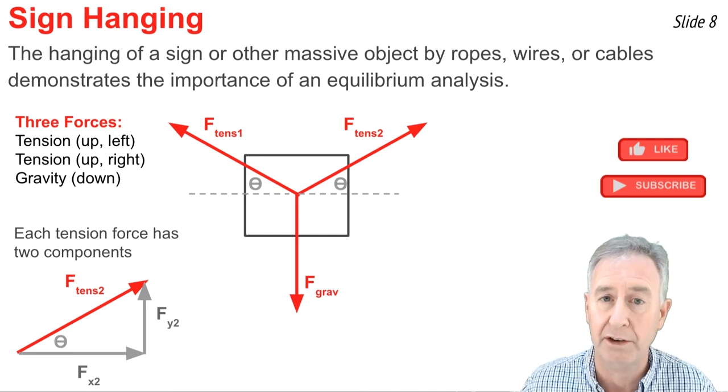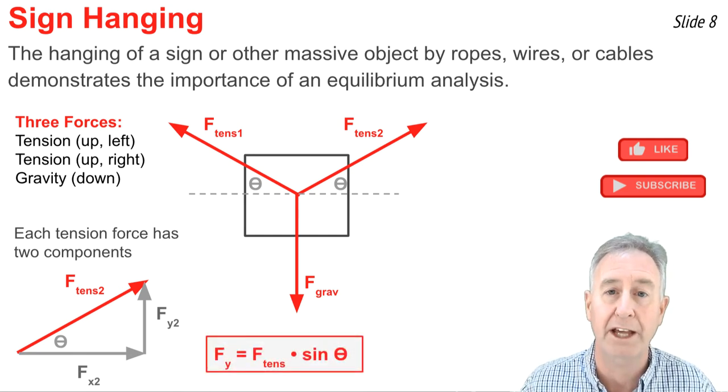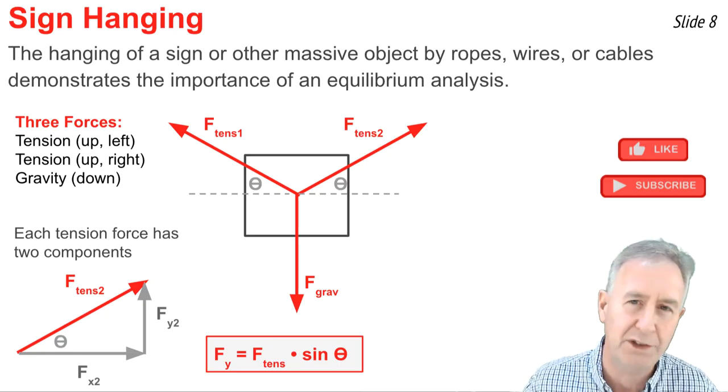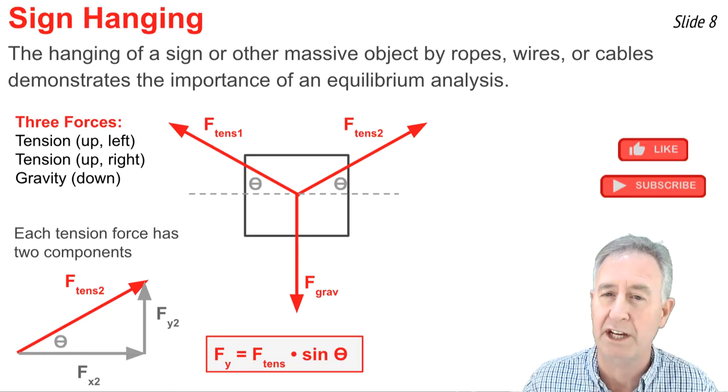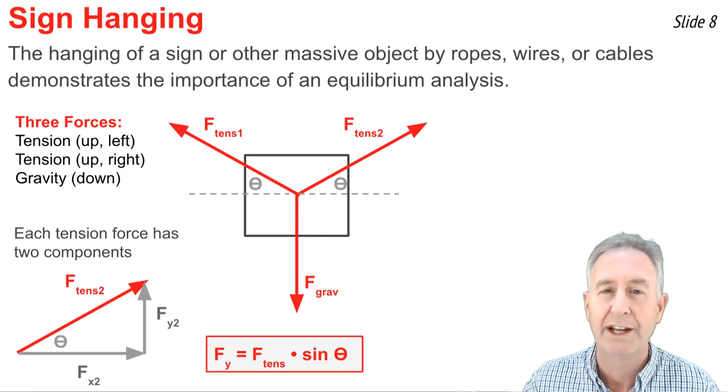since it's the side on the triangle that's opposite theta, that it could be found by taking the hypotenuse of the triangle, the tension force, and multiplying by the sine of the angle, as shown by this equation.